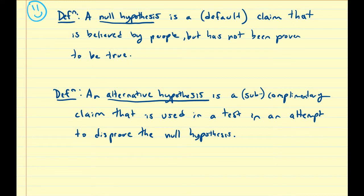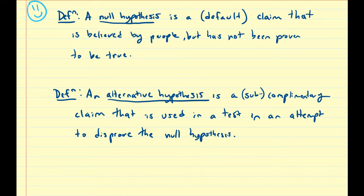In this video we're going to talk about two main concepts in the field of hypothesis testing: the null hypothesis and the alternative hypothesis. A null hypothesis is typically a default claim that is believed by people but has not been proven to be true. This latter part is usually assumed because if it has already been proven to be true, you usually won't be testing against it anyway, because at that point it's a fact.